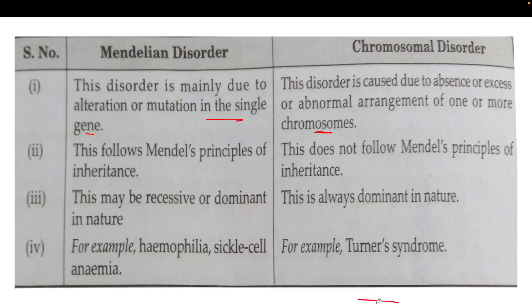In a chromosome there are many loci. Each locus corresponds to a particular characteristic or gene. A locus can have either capital A or small a arrangements. When the complete chromosome arrangement changes or some mutation happens at the complete chromosome level, it is called a chromosomal disorder.